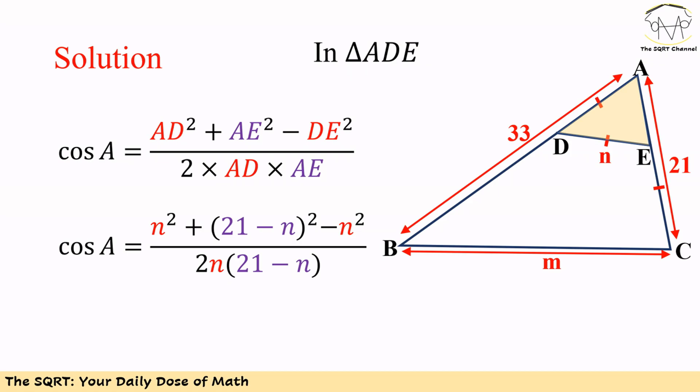Now if we use the values for each edge, we are going to have cosine of A is equal to N² plus (21-N)² minus N² over 2N times (21-N).